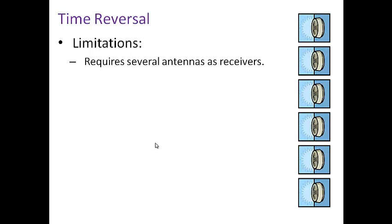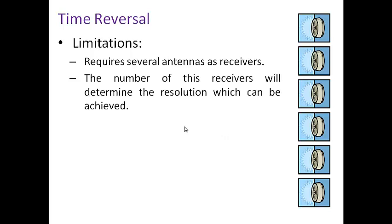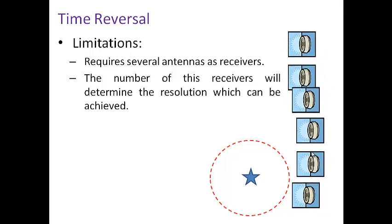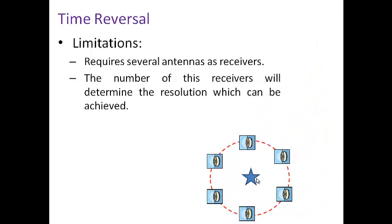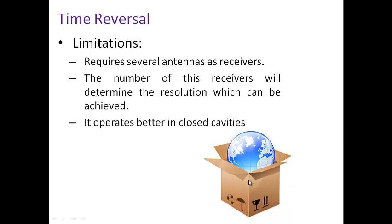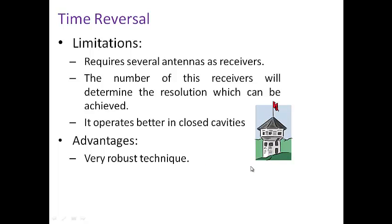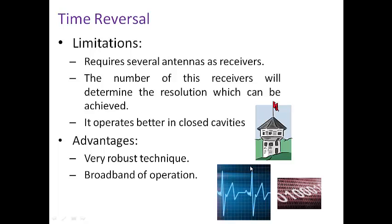Time reversal has some limitations. The most important is that it requires several antennas or receivers. Moreover, the resolution is associated with the number of receivers. If we want to detect a point, we have to place all the sensors around it in a circle. The number of receivers determines the resolution. Another option is to use a metallic cavity that closes the space inside to achieve equivalent resolution. As advantages, this is a very robust technique with broadband operation.